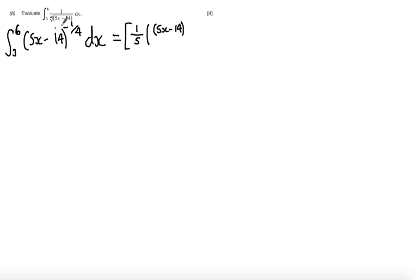I'm going to increase the power by 1. So minus a quarter, add 1 to get positive 3 quarters. And then I need to divide by this new power. So all over 3 quarters. And this is going to be evaluated between 3 and 6.